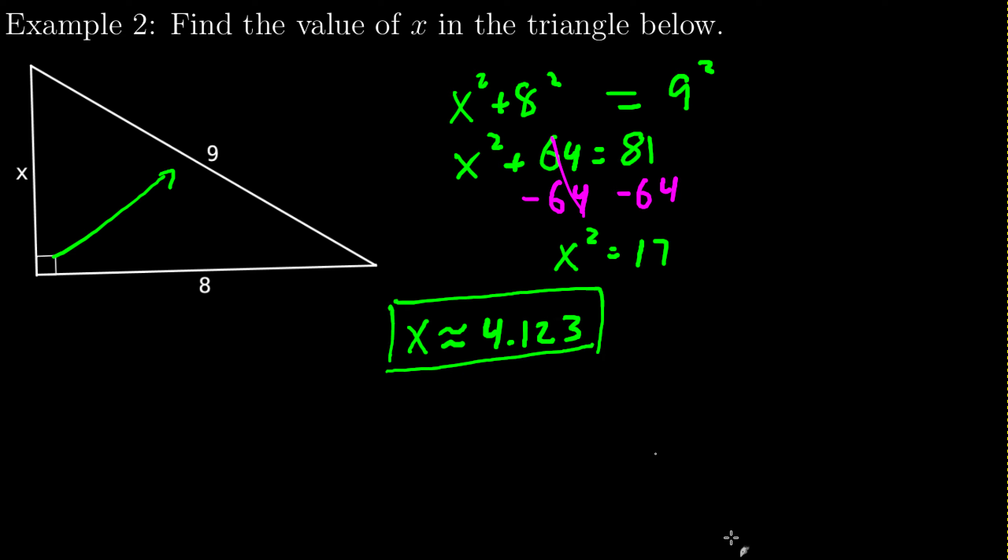By doing that, by checking that, I know that this wasn't a perfect square. So I know that I didn't waste time when I try to do the square root. Now, the other method, breaking it down, well, 17 is already prime. It doesn't break down. There are no pairs. So the exact answer is actually x equals root 17.